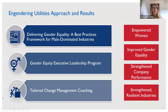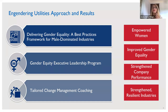The Engendering Utilities program works to increase gender equality and women's workforce participation in male-dominated industries around the world. We use a three-pronged approach. One is the gender equality best practices framework, which really underpins everything we do. It provides an evidence-based methodology for increasing gender equality at each phase of the employee lifecycle. It focuses on changing policies and practices and very much focuses on making organizational culture change.